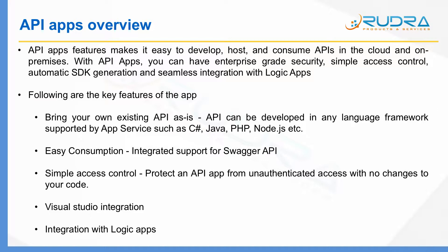Secondly, there is integrated support for Swagger API. By enabling Swagger, you make it easy for others to consume your APIs, and you also provide good visibility of APIs to developers. Thirdly, there is simple access control. If you want to protect your API against unauthorized access, you can do so using Azure API apps with literally no changes to your code.